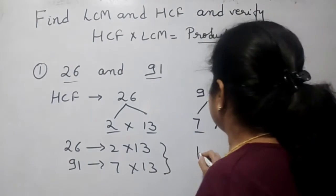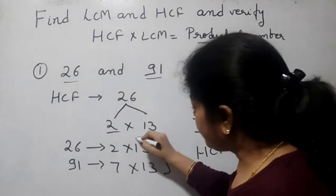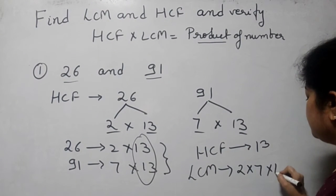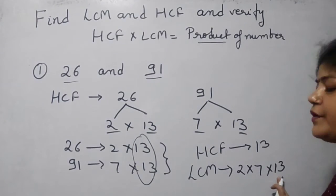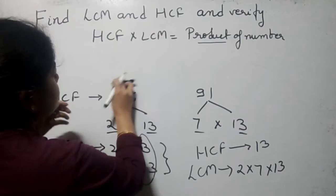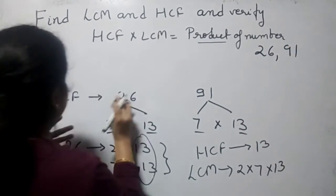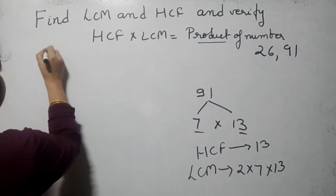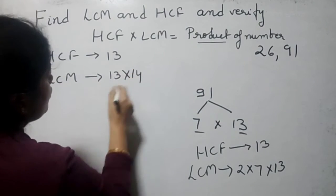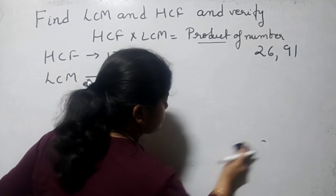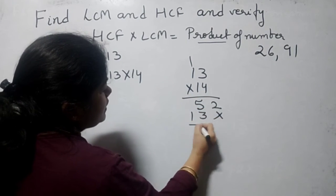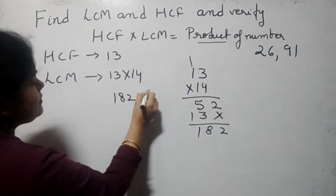From the prime factors — 26 = 2×13 and 91 = 7×13 — we find HCF is 13, because 13 is found in both of them. And LCM is 2×7×13 — taking the numbers left over and the common one only a single time. So LCM = 2×7×13 = 182.